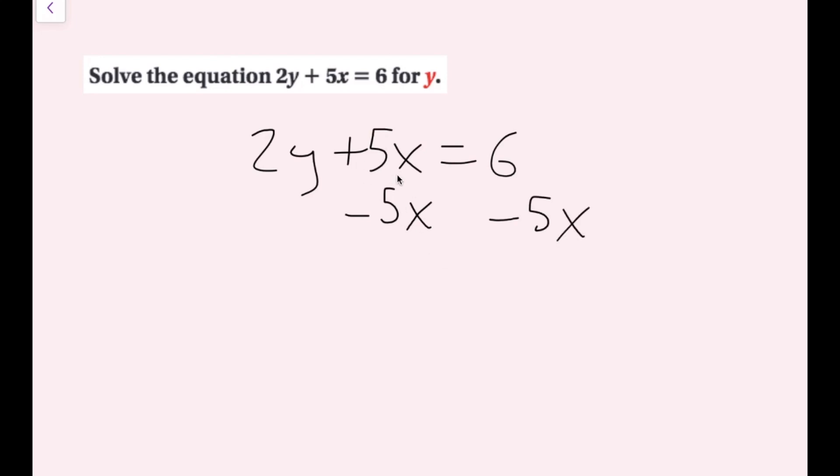So now these 5x terms are going to cancel out. I'm going to bring down my 2y, bring down my equal sign. And then we can either write it as 6 minus 5x, which is just going to stay there because they're not like terms. But it's not a bad idea to get in the habit of writing it in the reverse order. So you can also write it like negative 5x, and then we want to figure out if the 6 is positive or negative. It's obviously positive, so then I would do plus 6.